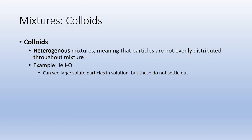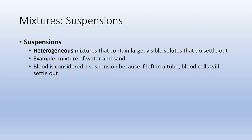A colloid and a suspension are both heterogeneous, meaning you can tell the difference between the solvent and the solute particles. In a suspension, the solute particles are rather large and they settle out or sink to the bottom. The example is blood — when left in a tube or spun in a centrifuge, red blood cells settle to the bottom leaving blood plasma at the top. Another example is a cup of sand and water; after a while the sand sinks to the bottom and you can tell the difference between solvent and solute.